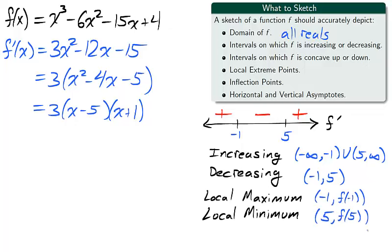And using the first derivative test, as f goes from positive to negative at negative 1, negative 1 f of negative 1 is a local maximum point. And as f goes from negative to positive at 5, 5 f of 5 is a local minimum point for f.